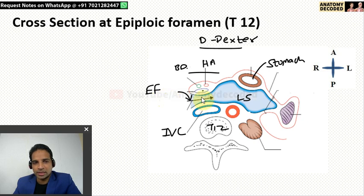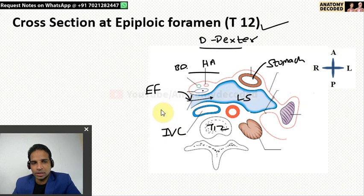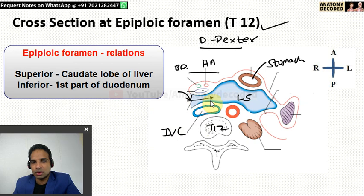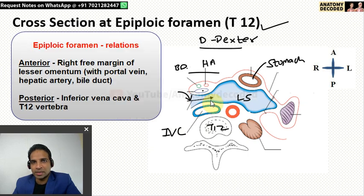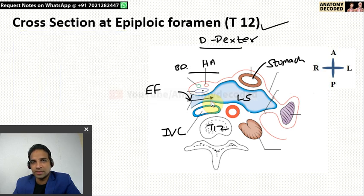For the superior and inferior relations: the epiploic foramen is found in a dissected specimen just behind the right free margin — we place the finger just behind the right free margin. Just below the finger is the first part of the duodenum, because the pylorus continues as the first part of the duodenum. So the inferior relation is the first part of the duodenum, and the superior relation is the caudate lobe of the liver. In summary: liver is above, first part of duodenum is below, anteriorly is the right free margin of the lesser omentum containing portal vein, hepatic artery and bile duct, and posteriorly is the inferior vena cava behind which is the T12 vertebrae.